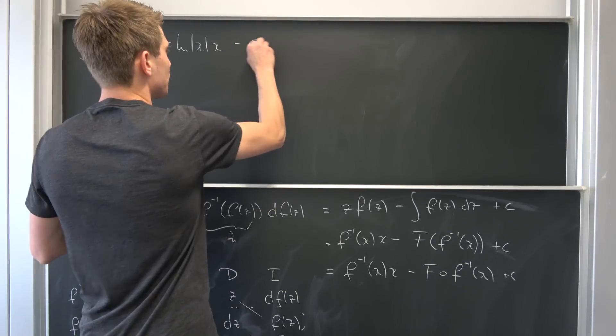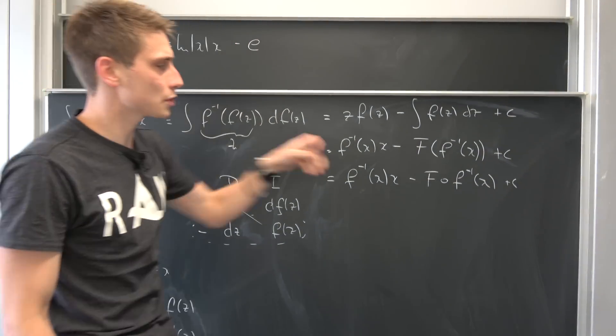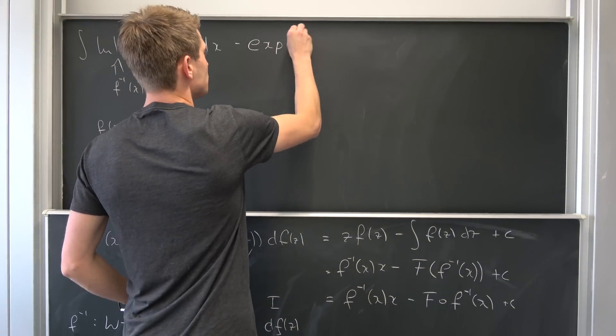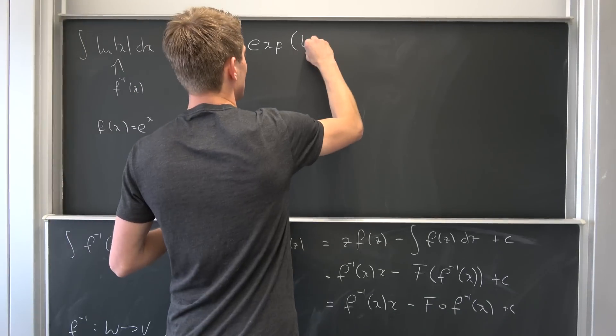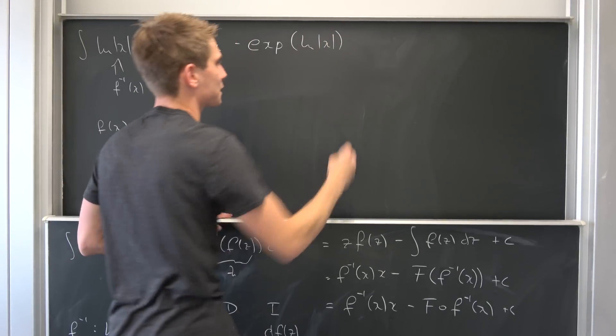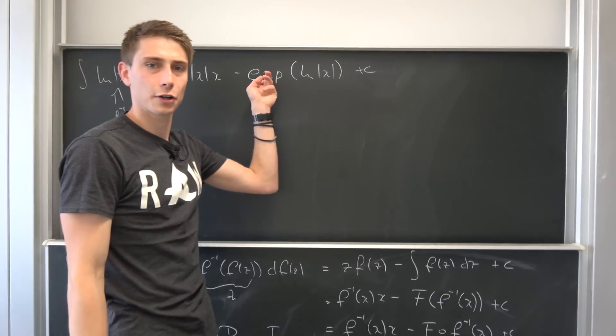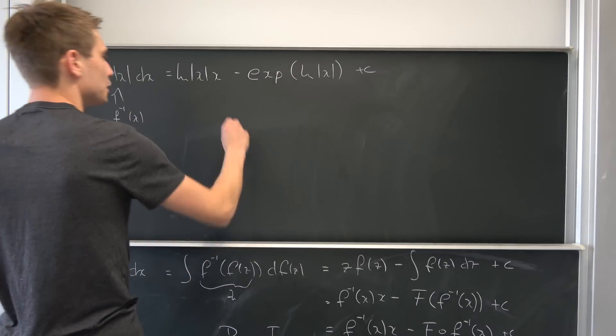So we need to use this inverse function on this exponential function. So I'm going to write it that way. Exponential function of our inverse function, which is our ln of x plus some arbitrary constant c. But the exponential function of the natural log is just x.